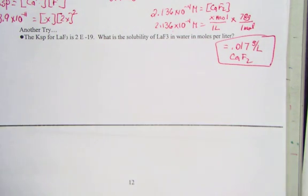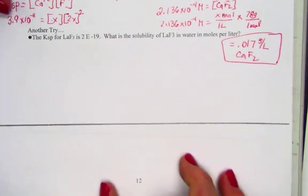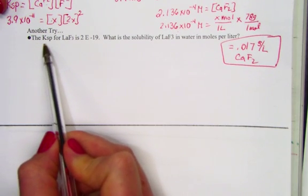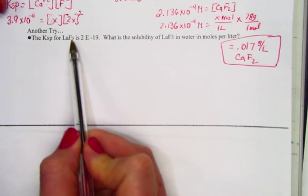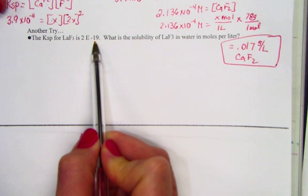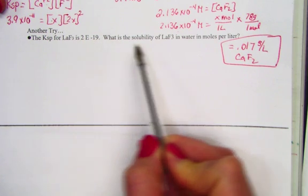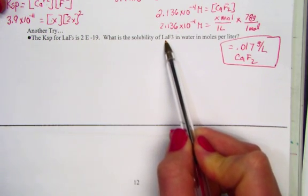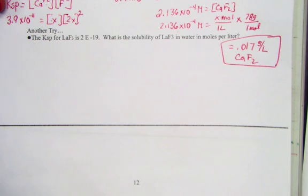The last problem we will work that will complete our note pack. Another try. The Ksp for LaF3 is 2 times 10 to the negative 19th. What is the solubility of lanthanum fluoride in water in moles per liter?